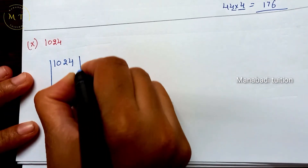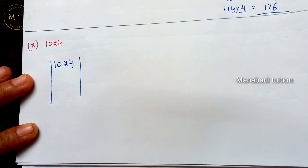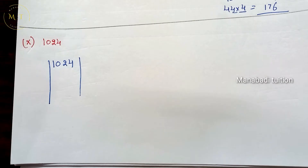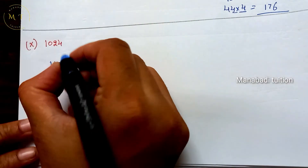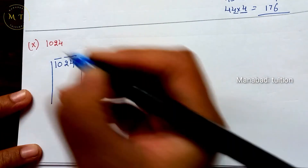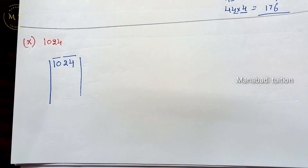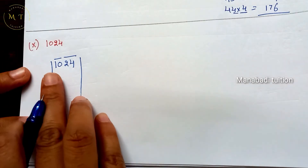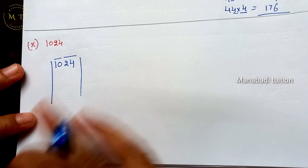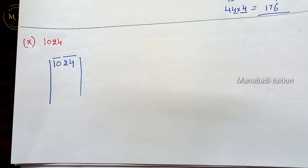Here, same — 4 digits, 2 pairs. From right side to left side: 24 is one pair, and 10 is one pair. So, first starting number is 10. 10 is the nearby number: 3×3 is 9, 4×4 is 16.